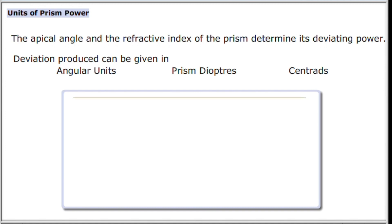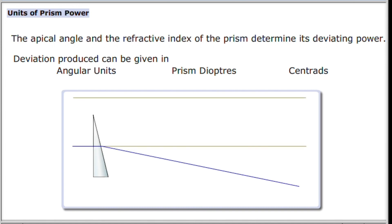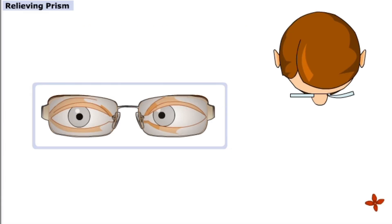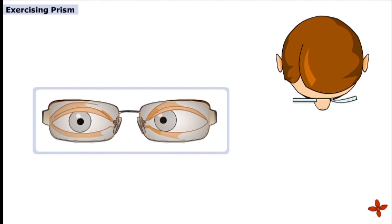Units of Prism Power: The apical angle and the refractive index of the prism determine its deviating power. Deviation produced can be given in angular units, prism diopters, or centrads. In a relieving prism, the object will move towards the deviated eye position. In an exercising prism, the deviated eye will shift towards the normal position for locating an object.